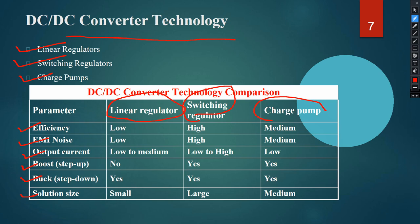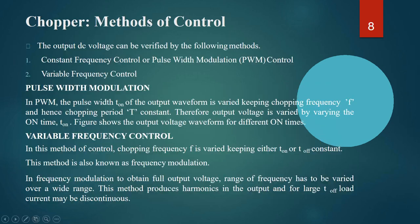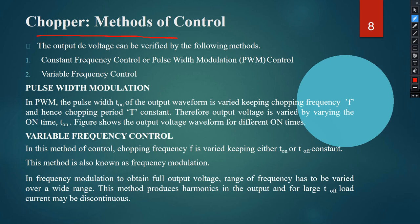The chopper methods of control: the DC output voltage can be varied by the following methods — constant frequency control, that means pulse width modulation (PWM) control, and variable frequency control.